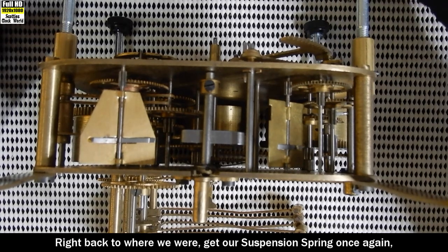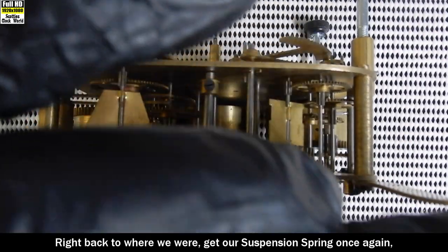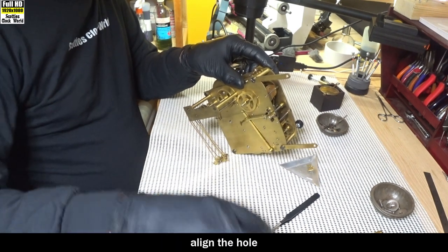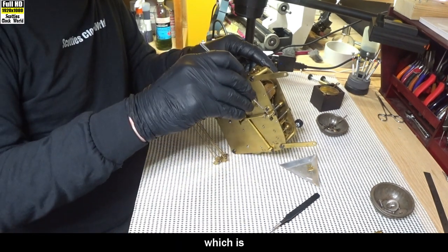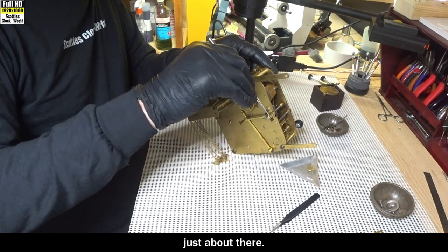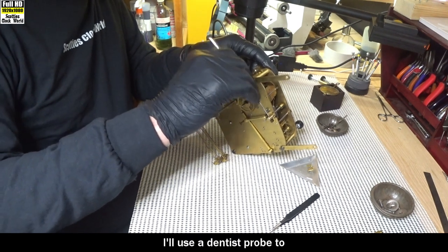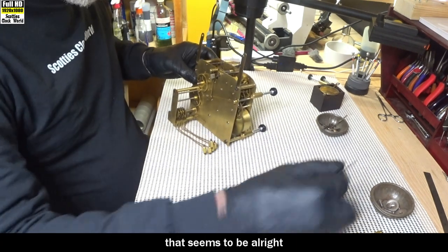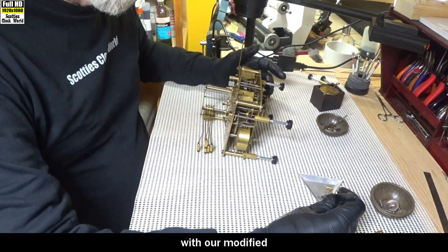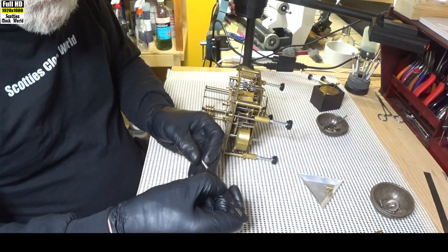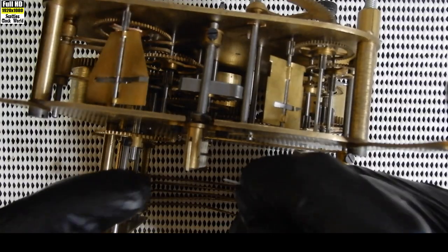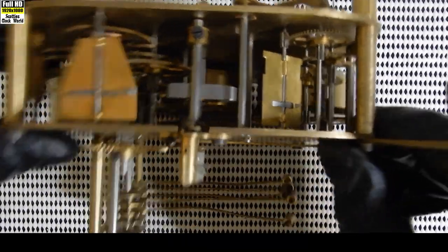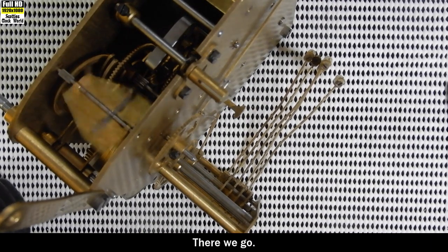Right, back to where we were. Get our suspension spring once again. Push it into the back cock. Align the hole, which is just about there. I'll use a dentist probe to align that. That seems to be all right. Now, with our modified tapered pin, it should now just slide straight in. And it does. Here we go.